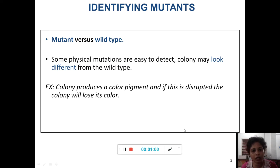You can identify some physical mutations by physical techniques. You can also see the colony because the colony may look different from that of a wild type. For example, you have the colony which produces a colored pigment that might be changed into a colorless one by the action of mutation.